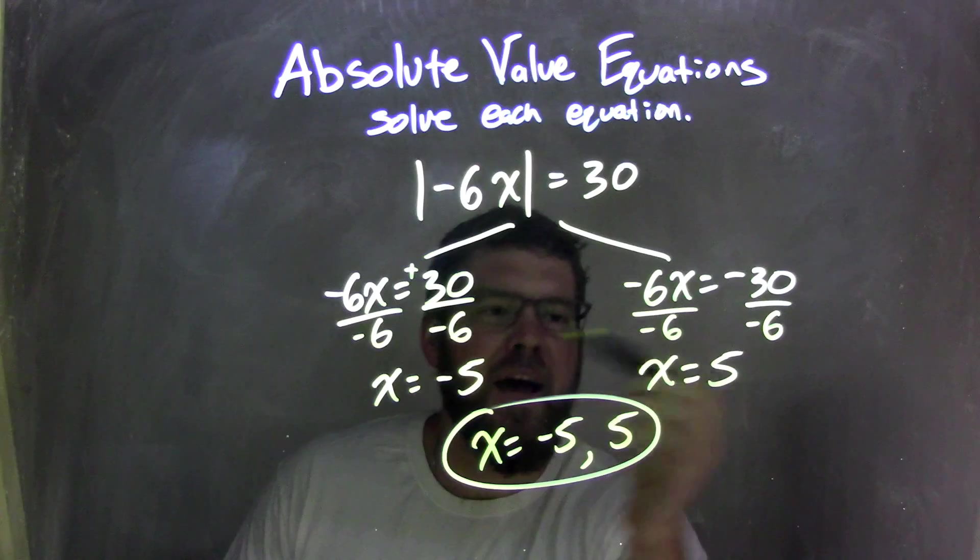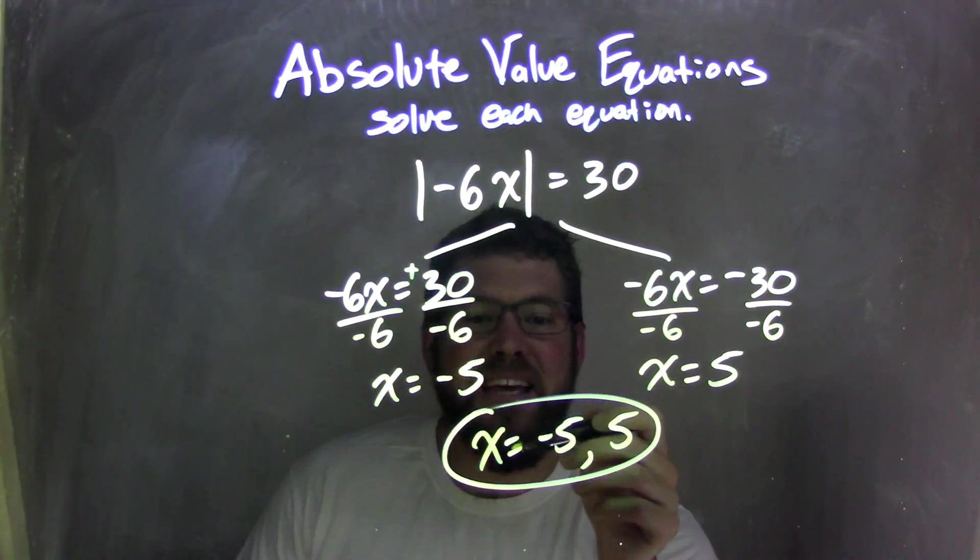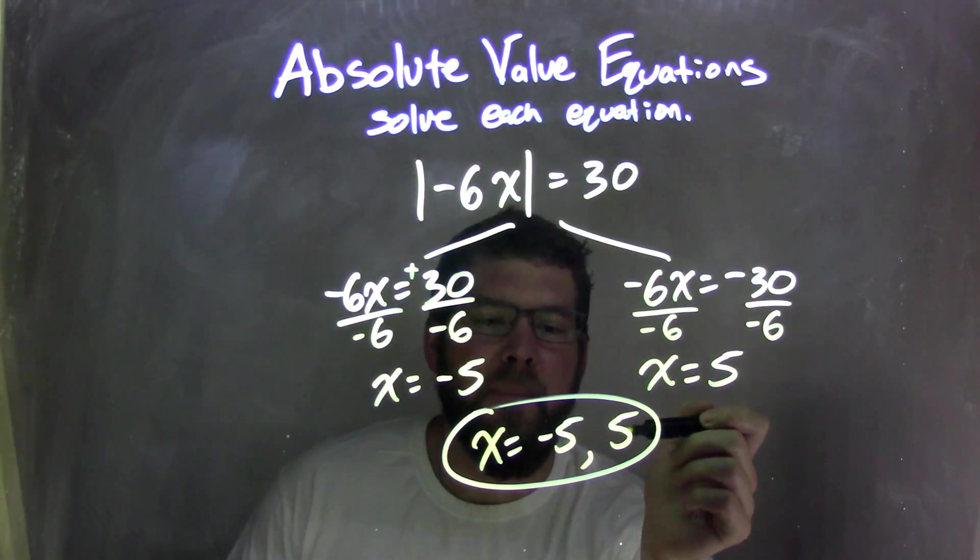x equals negative 5 on the left, and x equals positive 5 on the right. And so my final answer here is x equals negative 5 and positive 5.